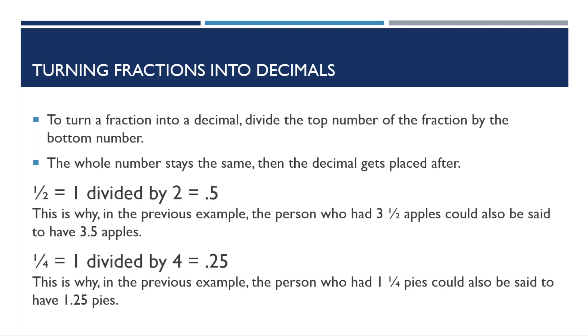For example, if we have one half, we would do one divided by two, which equals 0.5. So this is why the person who had three and a half apples in the previous example could also be said to have 3.5 apples.